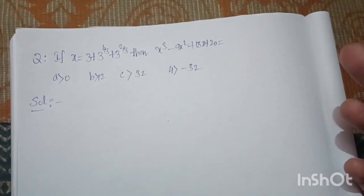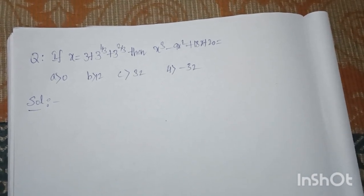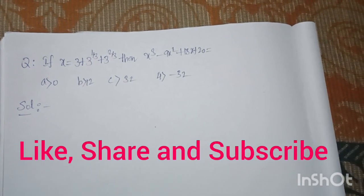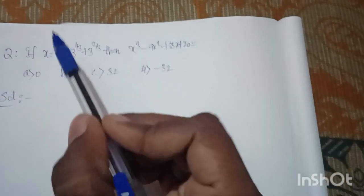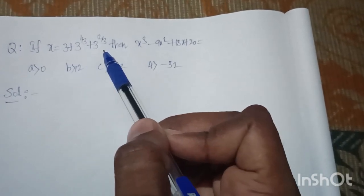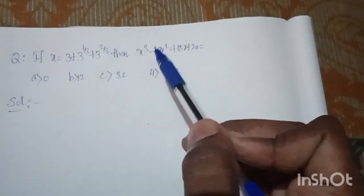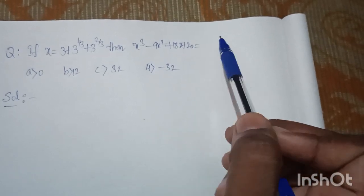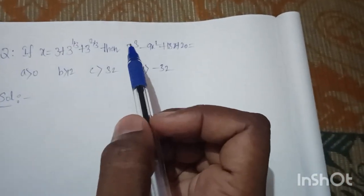Hi students, welcome back to my channel. Today we'll solve a simple problem. This problem looks complex because x is given as x = 3 + 3^(1/3) + 3^(2/3), and what we need to find is x³ - 9x² + 18x + 20. We need to find this large value if we know the value of x.